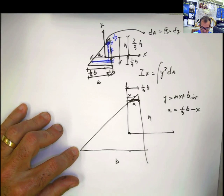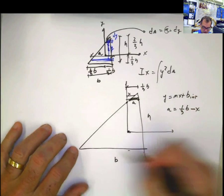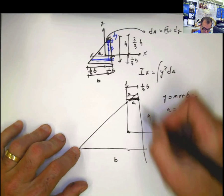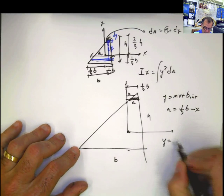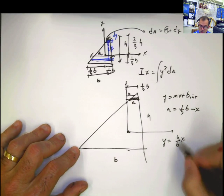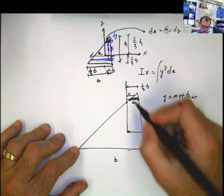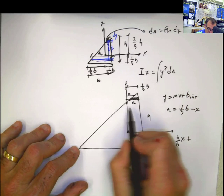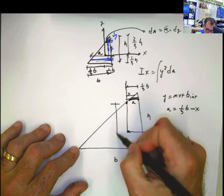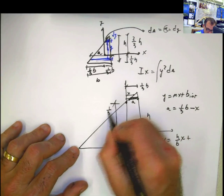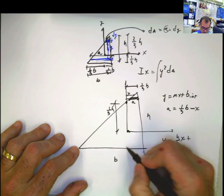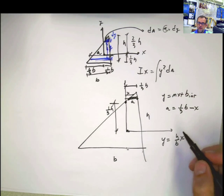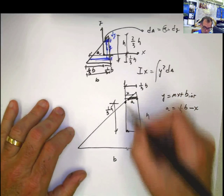The slope is rise over run — rise is H, run is B — so the slope is H over B. So y equals H over B times x plus the y-intercept. Now, the y-intercept is the height from the x-axis up to where the line crosses, which is 1/3 of H. So the y-intercept here is 1/3 of H. You can prove this: the height is divided into three equal thirds.